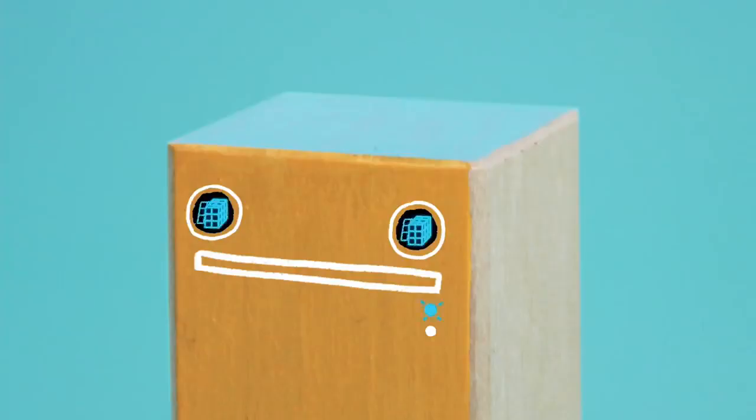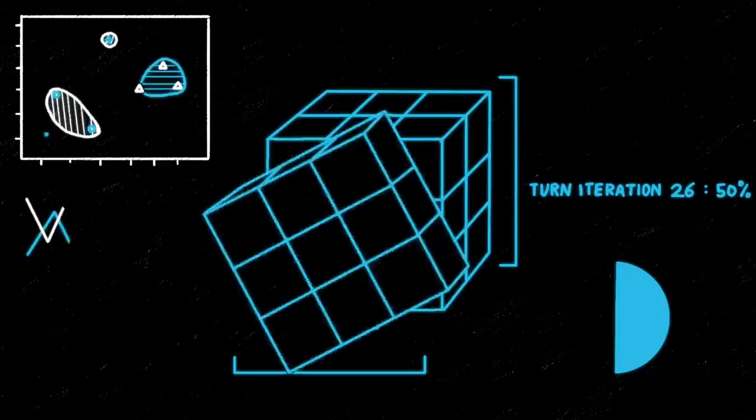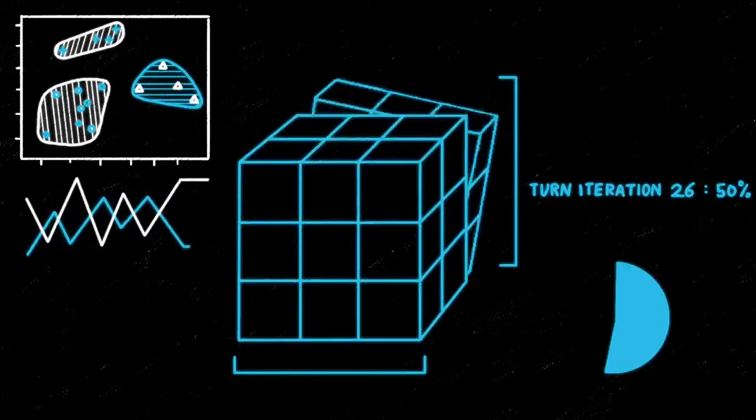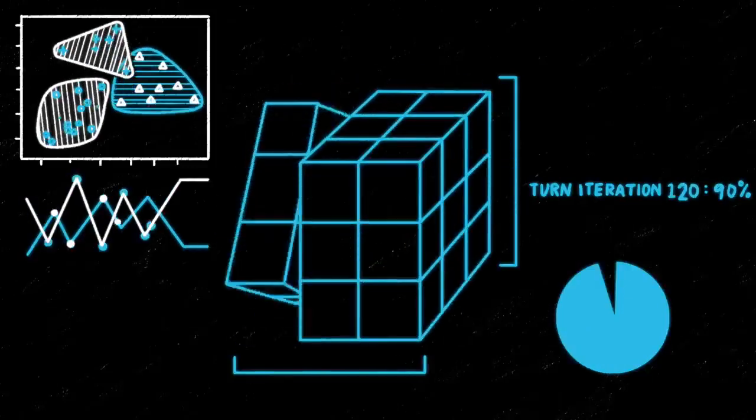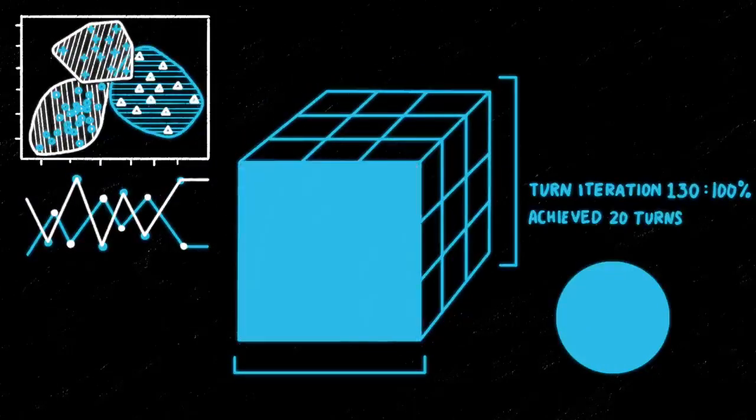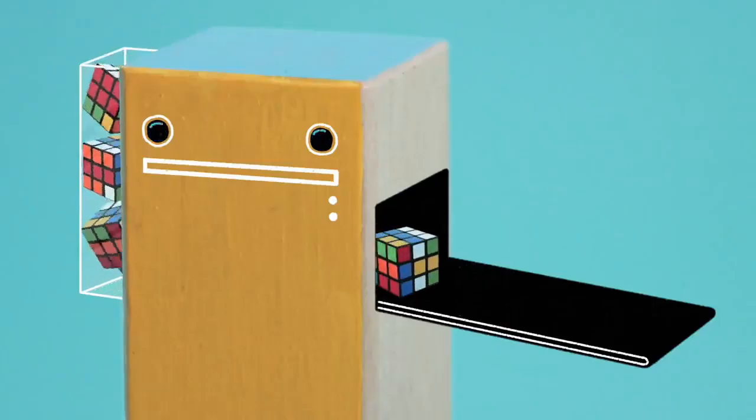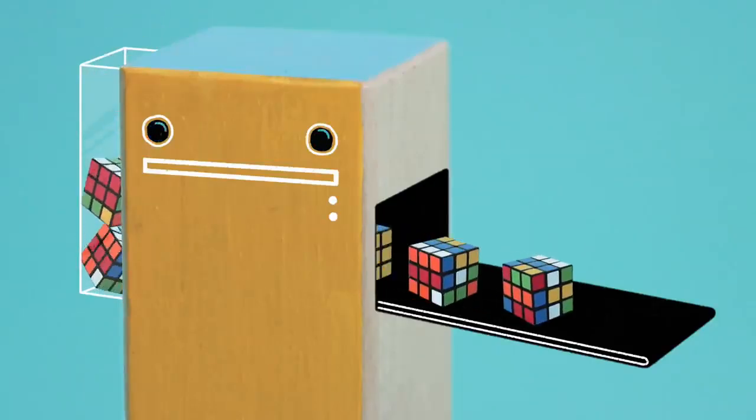But did you know that computers can do the same? Machine learning brings together statistics and computer science to enable computers to learn how to do a given task without being programmed to do so. Just as your brain uses experience to improve at a task, so can computers.